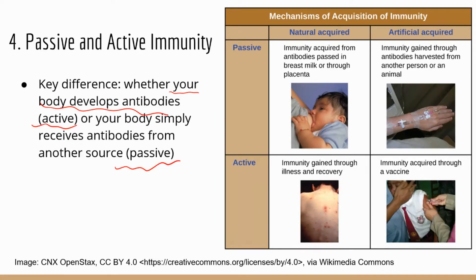Here are some examples of passive immunity. If you're a baby drinking breast milk, that milk contains antibodies made by the mother's body. If you are a fetus growing in the uterus, the mother and fetus exchange blood, so the mother's antibodies in the blood can be transported to the baby's blood — that's passive immunity.